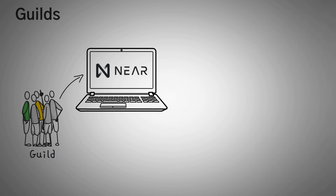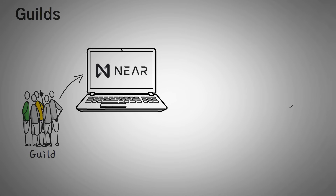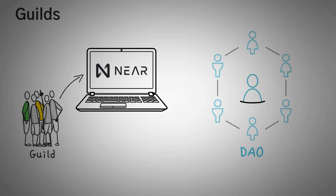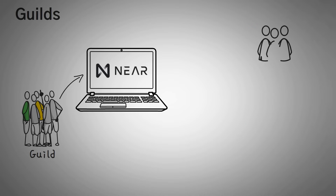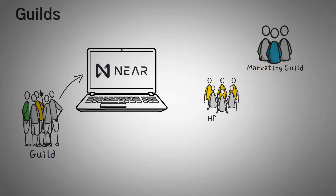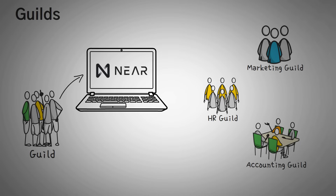Probably my favorite thing about the NEAR protocol is the idea of guilds. Guilds are basically groups of people that do things for NEAR. A DAO is a decentralized company where you don't need a president or CEO to make decisions — instead, decisions are made by token holders, and the more tokens you have, the more voting power you have. In NEAR, guilds are like different departments of a company, where you have the marketing department, HR department, the accounting department, and groups of people can join to help out the protocol.